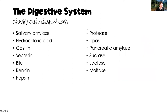Chemical digestion involves all the enzymes and secretions excreted by different parts of the digestive system that help break down food and ultimately absorb it into the bloodstream. These include salivary amylase, hydrochloric acid, gastrin, secretin, bile, renin, pepsin, protease, lipase, amylase, sucrase, lactase, and maltase — all chemicals secreted by the body to help break down food.